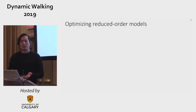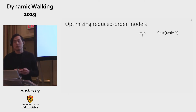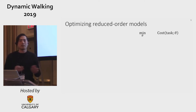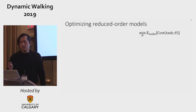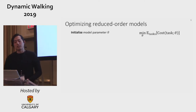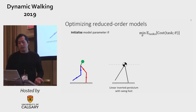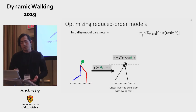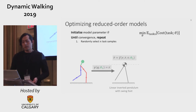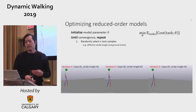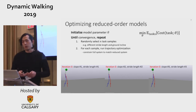So what's the mathematical problem here? We want to minimize some form of cost given the task. What we really want is for the robot to be able to do a lot of tasks, so we average the cost and minimize it. We use stochastic gradient descent. First, we initialize the model parameter — for example, we want this five-link robot to act like a linear inverted pendulum with a swing foot. Then we repeat the following steps: we randomly pick N tasks, which could be different stride lengths or different inclines. For each sample, we run trajectory optimization for the full order model where the reduced order model embedding acts as a constraint.